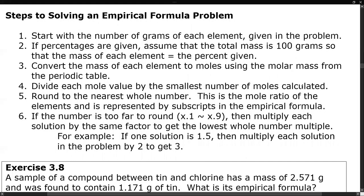These are the steps to solving an empirical formula problem. We're going to start with the number of grams of each element given in the problem. If alternately percentages are given, if we assume a 100 gram mass, the percent of each element is equal to the mass — we just take the percent sign away and add the G for grams.